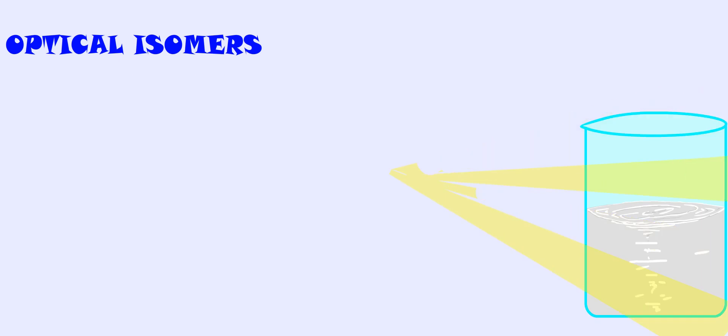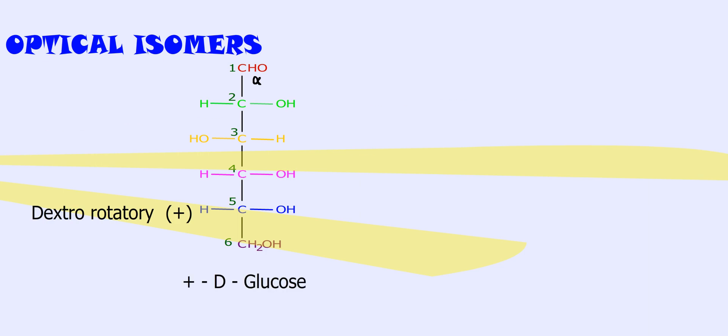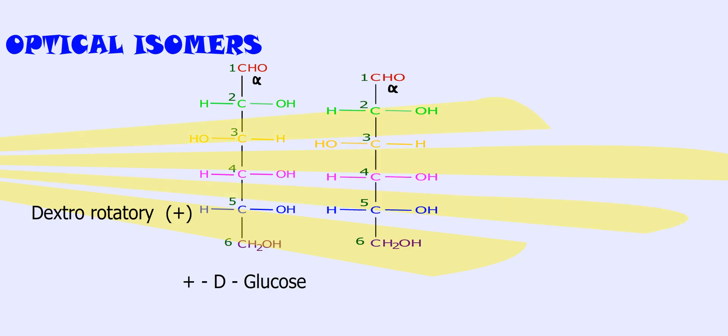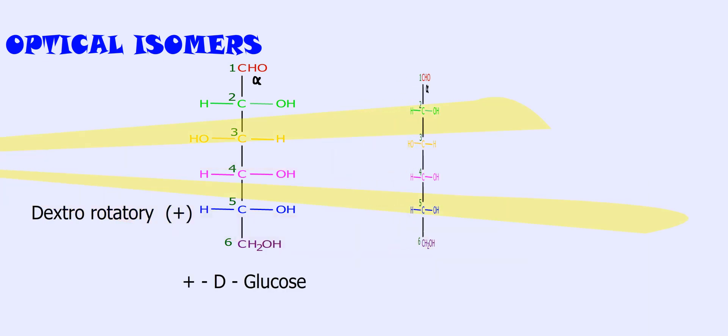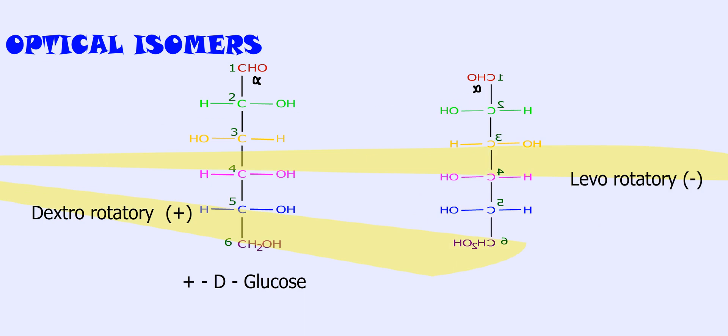5. Optical isomers. When a beam of plane polarized light is passed through a solution of an optical isomer, it rotates either to the right, called dextrorotatory, represented by the sign plus, or to the left, called levorotatory, represented by the sign minus.